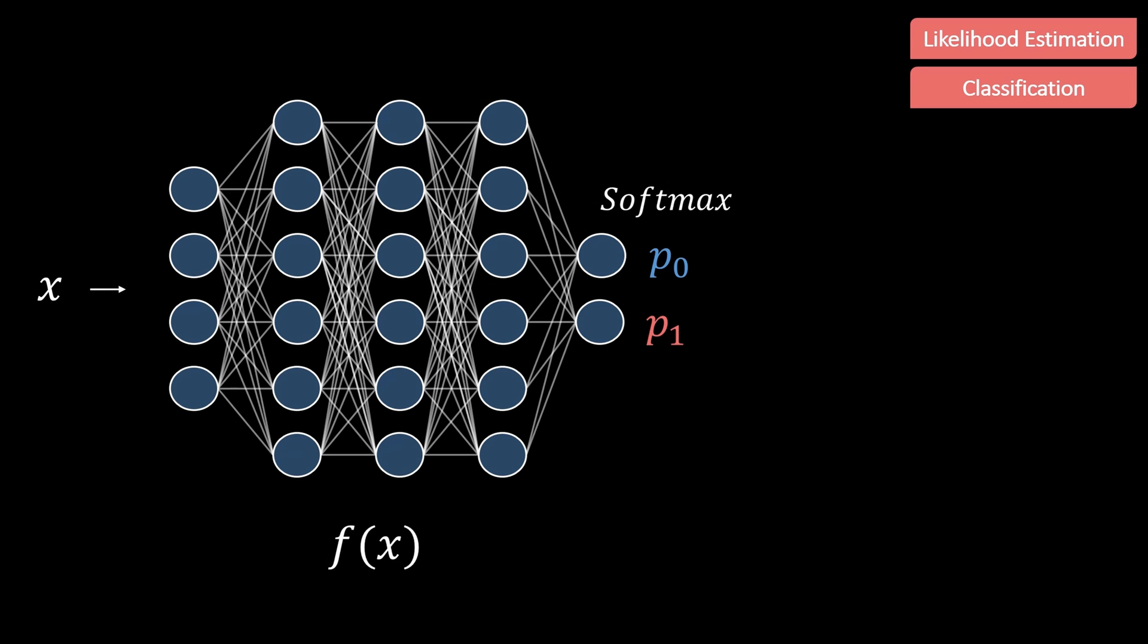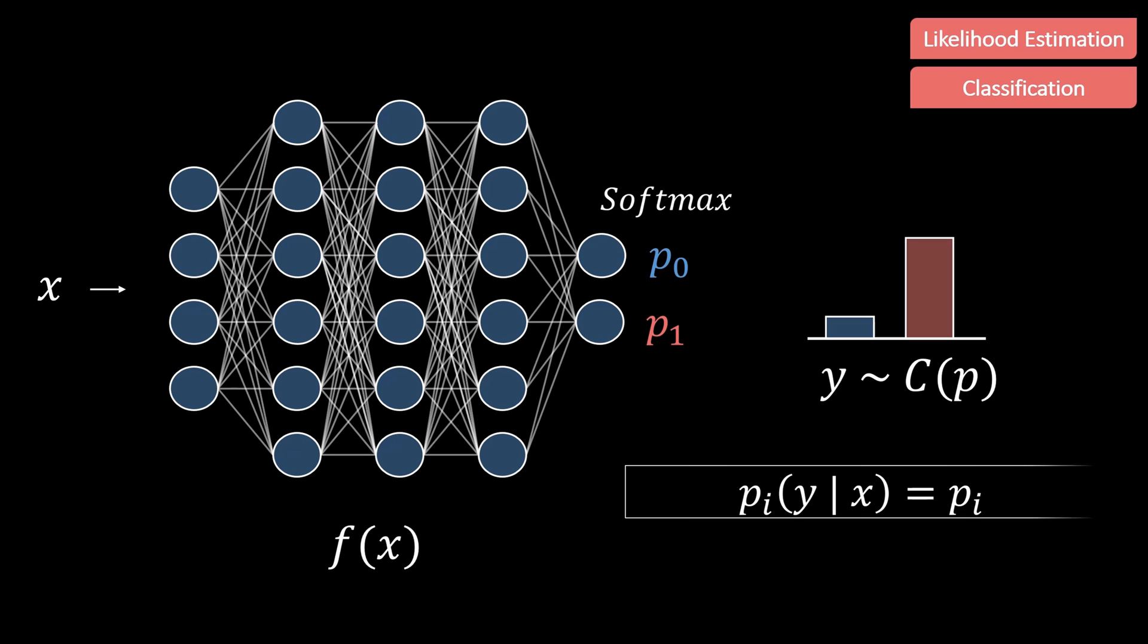Let's also quickly have a look at the classification case, which is quite similar. When we apply softmax in the final layer of a classification network, we automatically end up with a probability distribution. Instead of the normal distribution we had for regression, we have a categorical distribution here. And the parameters that define this distribution are the predicted class probabilities of each class. Similarly, as before, we can also maximize the likelihood, which is done by minimizing the cross entropy. Further details can again be found in the video description.